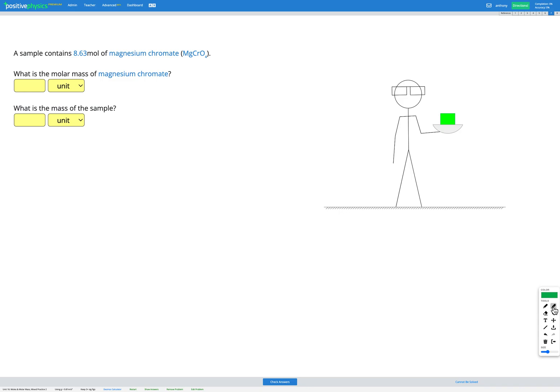So in this question, we have 8.63 moles of magnesium chromate, which has a formula MgCrO4. Our first step will be finding the molar mass of magnesium chromate, and our second step will be finding the mass of the sample.